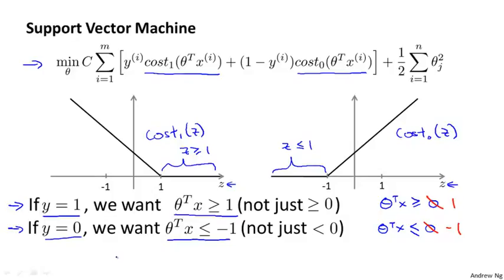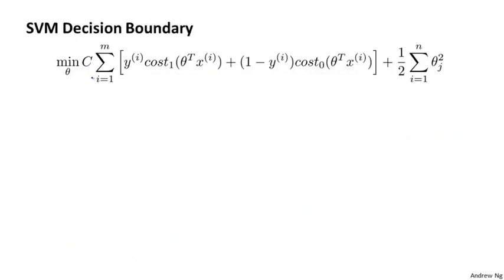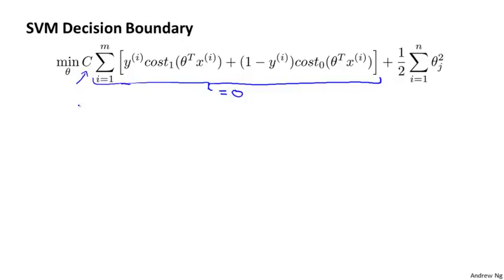Concretely, what I'd like to do next is consider a case where we set the constant C to be a very large value — maybe 100,000, some huge number. If C is very, very large, then when minimizing this optimization objective, we're going to be highly motivated to choose a value so that this first term is equal to zero. Let's understand the optimization problem in the context of what it takes to make this first term equal to zero, because this should give us additional intuition about what sort of hypotheses a support vector machine learns.